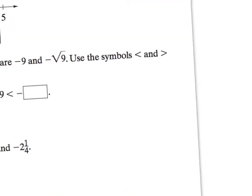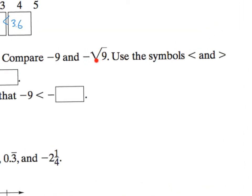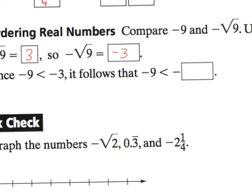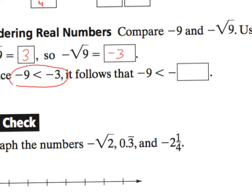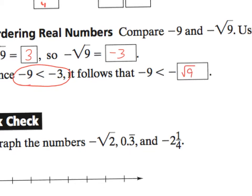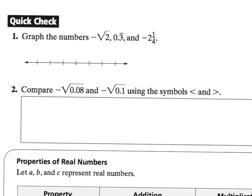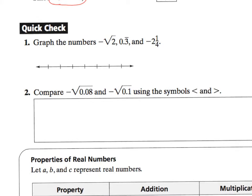And lastly, let's compare negative 9 with negative radical 9, using the symbols greater than or less than. Since radical 9, or the square root of 9, is 3, so that means the opposite of that is negative 3. So we know that negative 9 is less than negative 3, so it follows that negative 9 is also less than the negative of square root 9. Now, check your work over here and see how you do on these two problems.